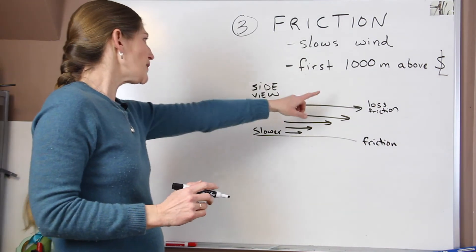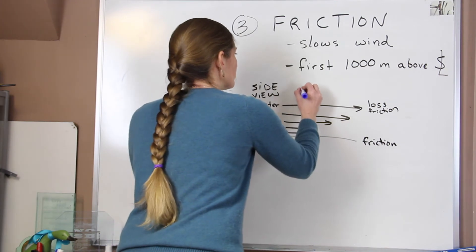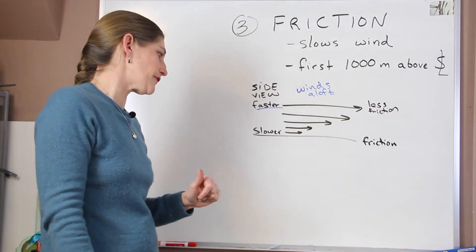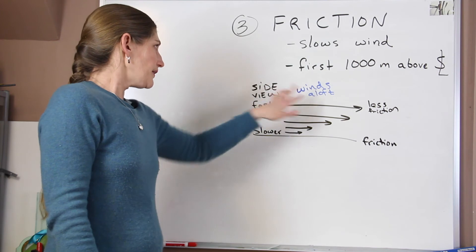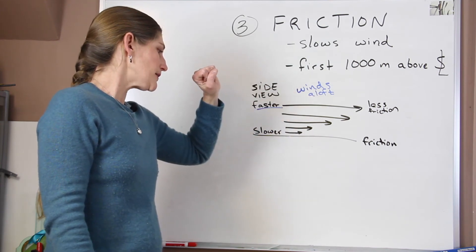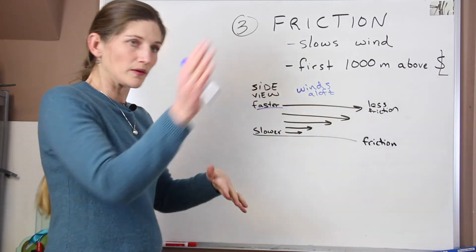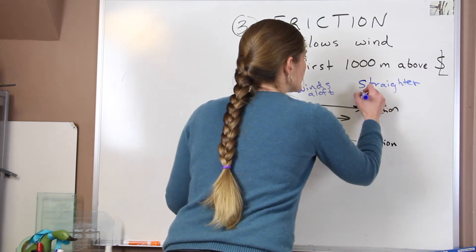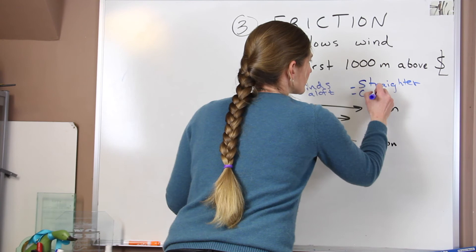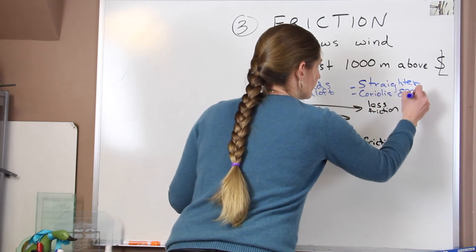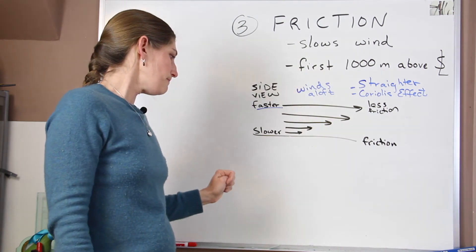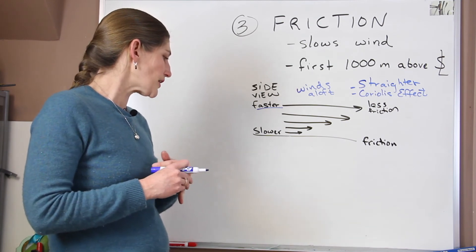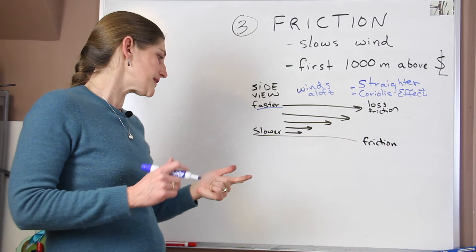The winds aloft — those winds up higher — are going to be faster because they have less friction with the surface. These upper winds tend to be straighter and more affected by the Coriolis effect: straighter, faster flowing, and with a higher Coriolis effect. So those are the three big controls for our wind direction and movement. We also talked about cyclones and anticyclones and those movements.